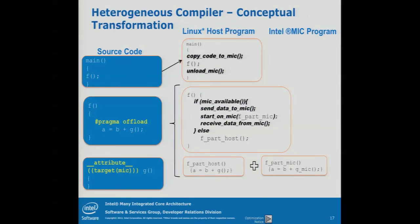When the code is finished, you receive all data that the code generated on the coprocessor back to the host. And if there is no MIC, the code just executes in a standard way. So for each offload pragma, the compiler creates a code path running on the host only, and a code path running on the coprocessor. Depending on whether the coprocessor is present or not, it will choose either one.